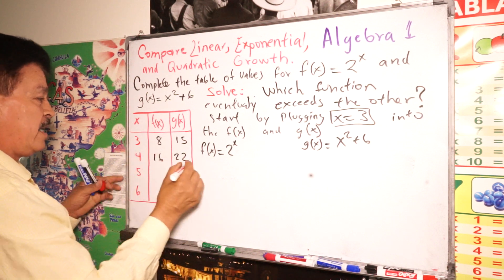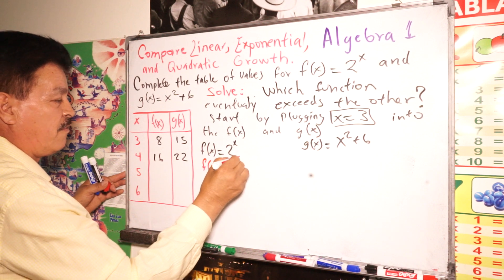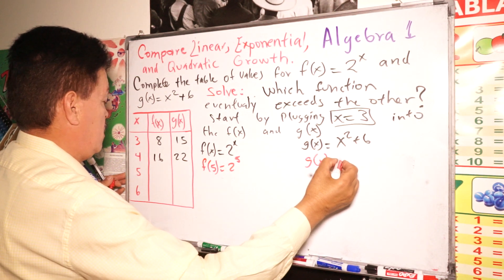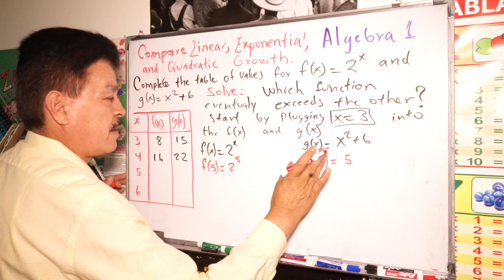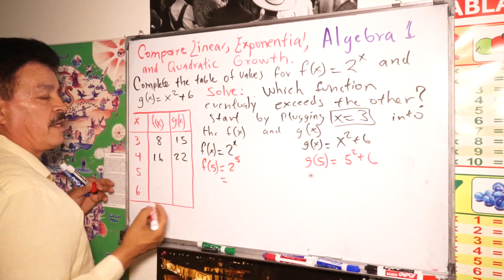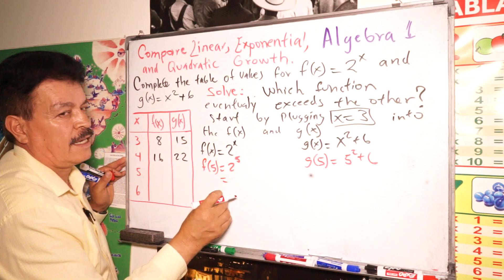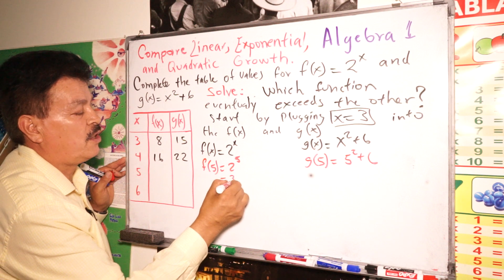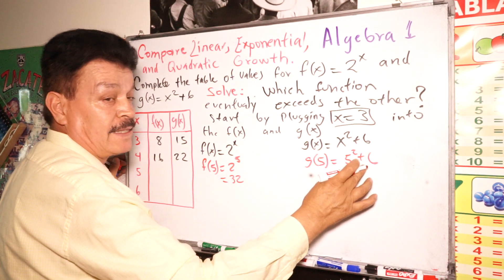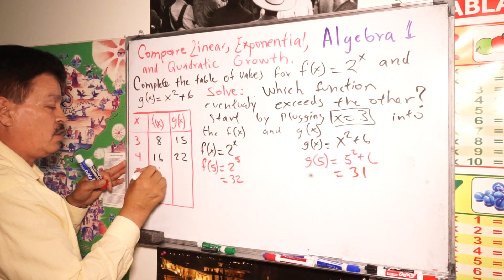Next value is x = 5. f(5) equals 2 to the fifth power, and g(5) equals 5 to the second power plus 6. So f(5) = 32, and g(5) equals 25 plus 6, which is 31. So f(5) = 32 and g(5) = 31.